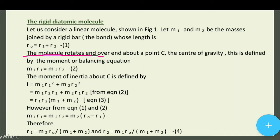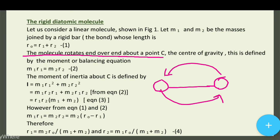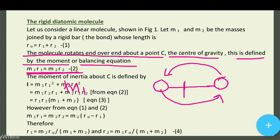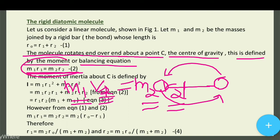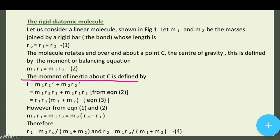The molecules rotate end over end about point C, which is the center of gravity. C is defined by the moment balancing equation: m1 r1 = m2 r2 (equation 2). اس rotation کو ہم اس balancing equation سے represent کرتے ہیں۔